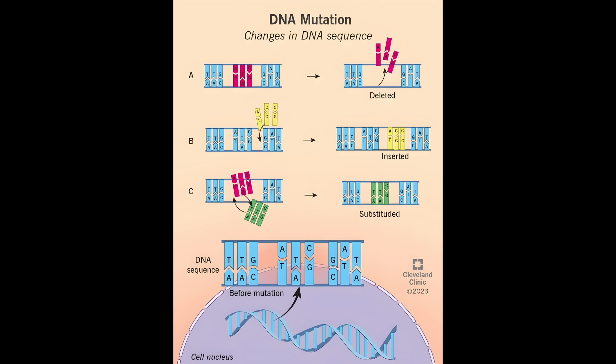These changes, called genetic mutations, can happen in three ways: single nucleotide changes, where the number of nucleotides stays the same; deletions, where you lose some nucleotides; and insertions, where you add more nucleotides.